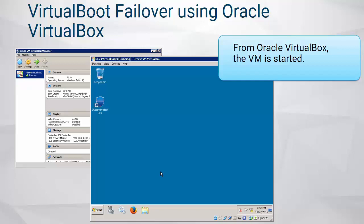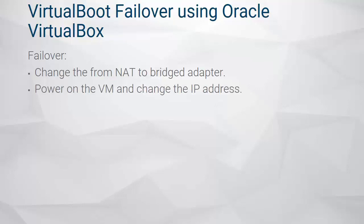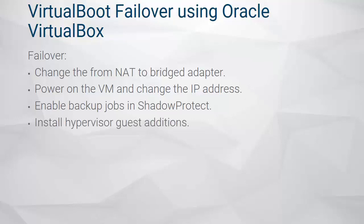To failover with Virtual Boot, some configuration is required before the system is ready to use. Follow this process to get consistent results. Change the network adapter settings in VirtualBox from network address translation (NAT) to bridged adapter. This allows remote connections to the VM. Power on the VM and change the IP address to the one used by the failed system. In the ShadowProtect console, enable the backup jobs for this system. Jobs for a system are automatically paused when one of its backup image files is loaded into Virtual Boot, and install Hypervisor guest editions.